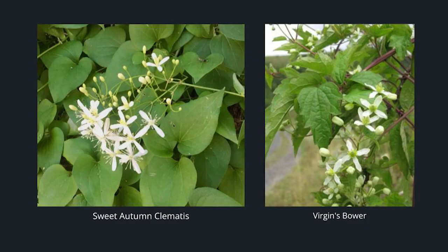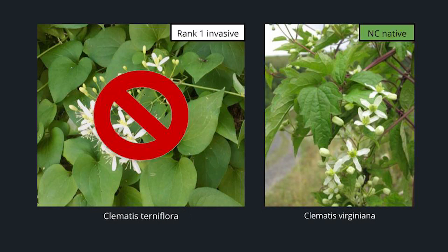Here's another example: two clematis vines that both have small white flowers and bloom the same time of year. However, one is Clematis terniflora, which is the non-native and is also considered a rank one invasive. And then we have our native Clematis virginiana.